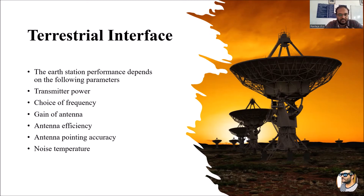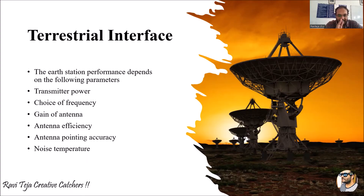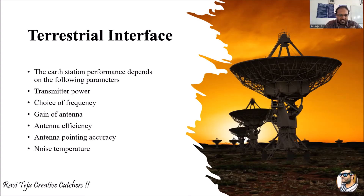Earth station performance depends on the following parameters: first is the transmitted power — how much power is transmitted along with the signal; second is the choice of frequency — how much frequency is selected for transmitting or receiving the signal; third is the gain of the antenna, which we have already discussed including G/T and related concepts. The efficiency of the antenna is also very important — whatever antenna you are choosing, whether parabolic or otherwise, the efficiency should be high.